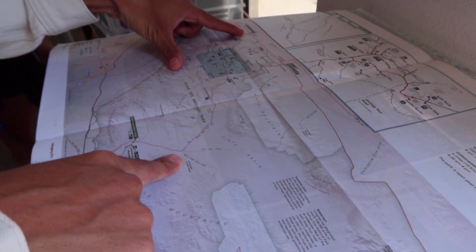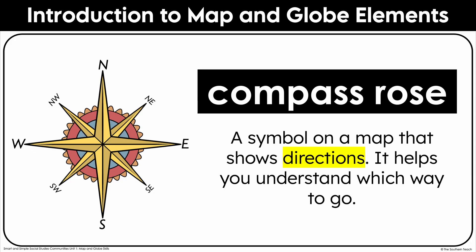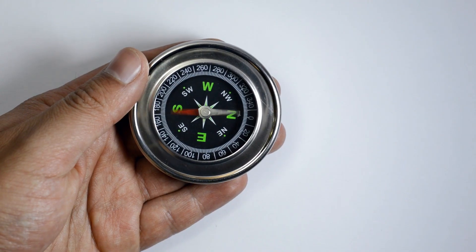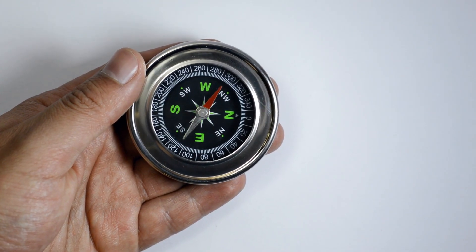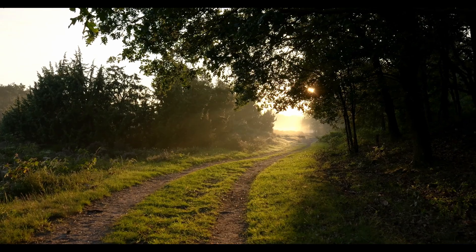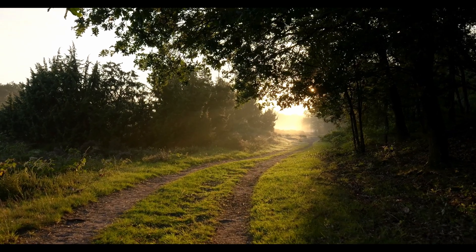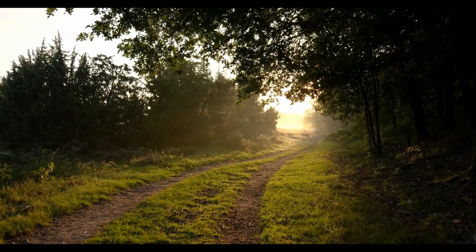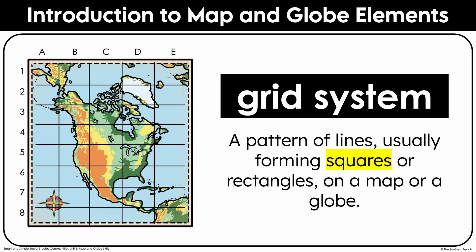A compass rose is a symbol on a map that shows directions: north, south, east, and west. Some also include intermediate directions — northeast, southeast, northwest, southwest — to help with more precise navigation. Did you know that early explorers didn't always have compasses, so they used the sun, stars, and natural landmarks to find their way?